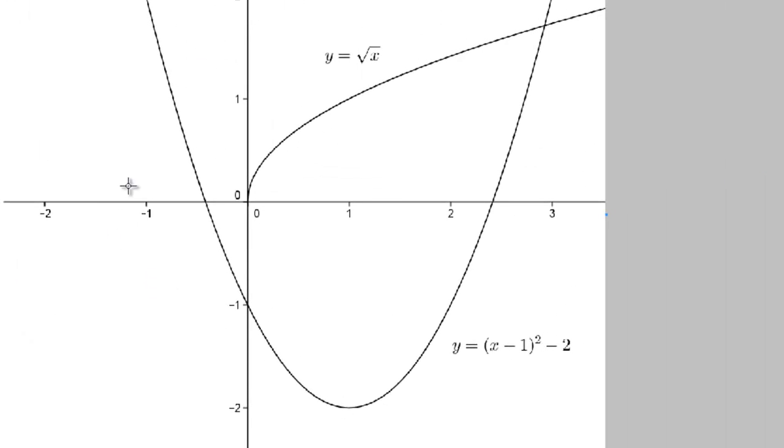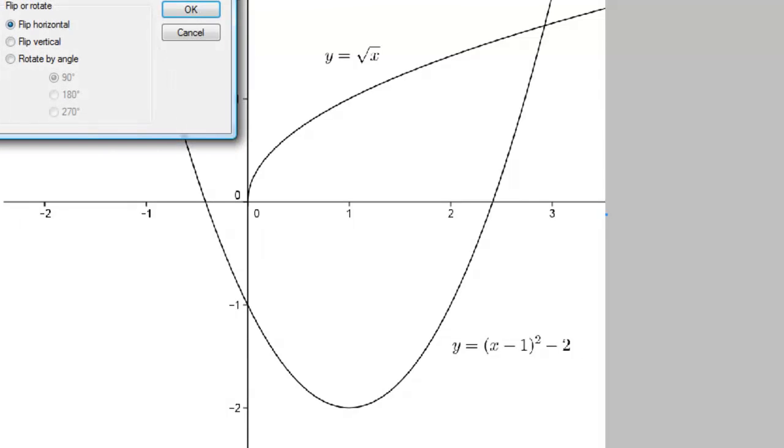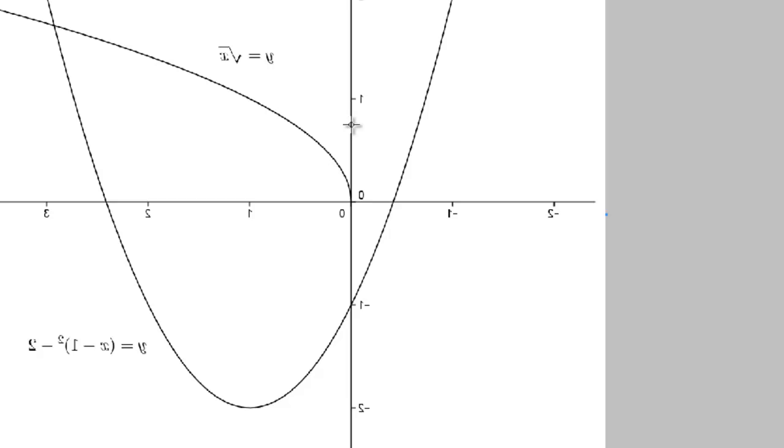So here's what our two graphs look like before flipping over the horizontal, or flipping over the y-axis. Now we're going to go ahead and flip. So flip horizontally, which is to flip over the y-axis. And that's what our graph looks like. You can actually tell that it's been flipped over the y-axis. The square root function is now going in the other direction. You can also see that the functions have been turned over. So you know that we flipped it horizontally.